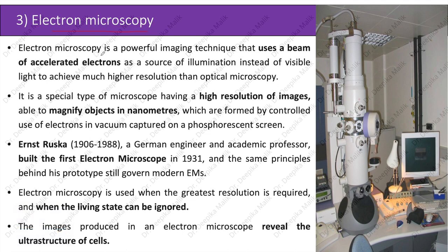Electron microscopy is a powerful imaging technique that uses a beam of accelerated electrons as a source of illumination instead of visible light, to achieve much higher resolution than optical microscopy. It is a special type of microscope having a high resolution of images, able to magnify objects in nanometers, which are formed by controlled use of electrons in vacuum captured on a phosphorescent screen.